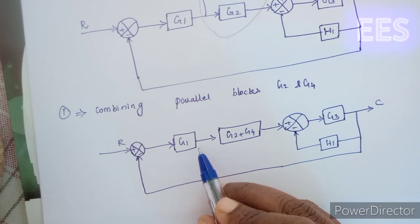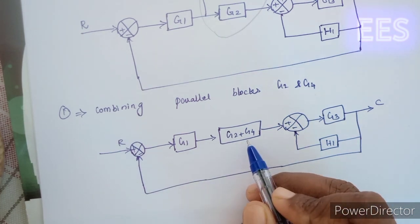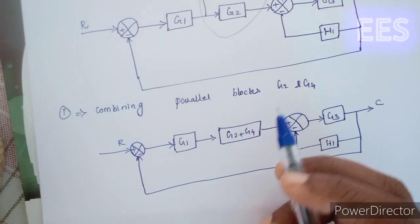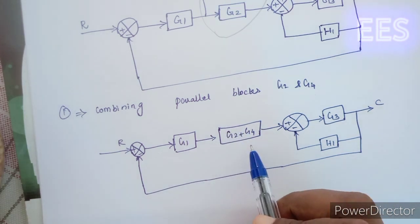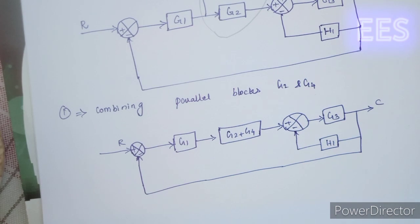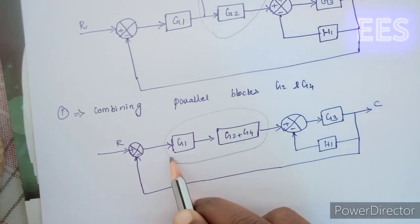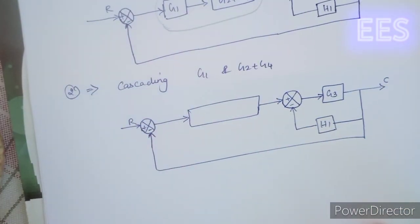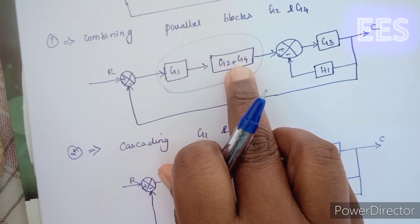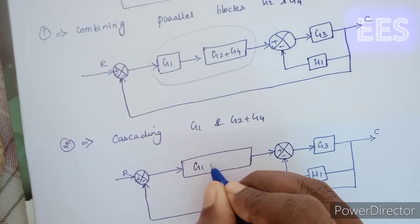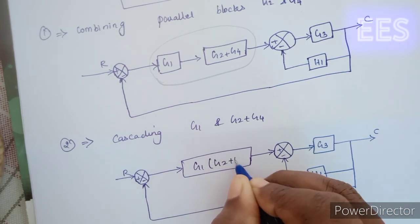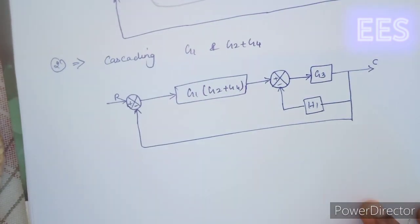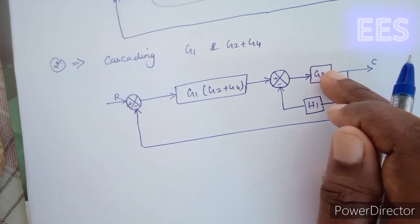For the next step, we have a cascade connection. That is G1 cascaded with the combined block (G2 plus G4). We will multiply G1 with (G2 plus G4) for the cascade combination.